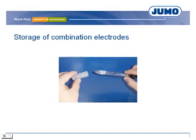The storage time of combination electrodes is limited and it is recommended to use them within six months. The electrodes are stored in a wet-retention cap filled with KCl solution to protect against drying. Otherwise, the electrolyte of the reference system steps out and cracks can open the membrane.